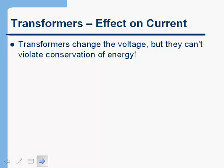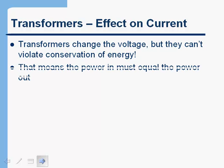The next question is: what happens to the current in the primary versus the current in the secondary when we have a transformer in a circuit? We've said that transformers change the voltage, but they can't violate conservation of energy. The energy per time that goes in one side of the transformer has to equal the energy per time that comes out the other side — we can't get more energy out than we put in.